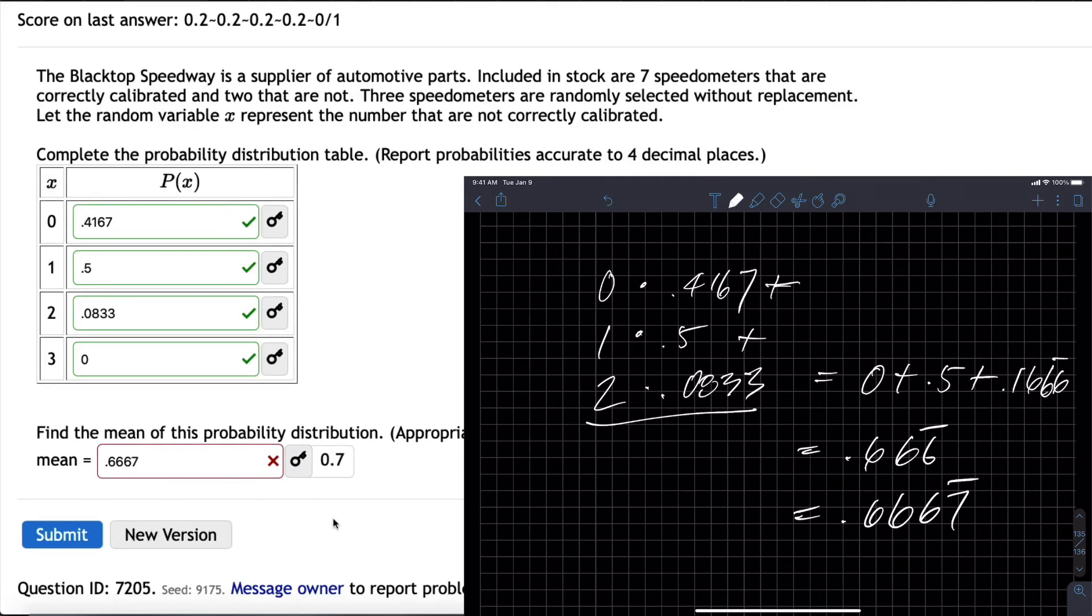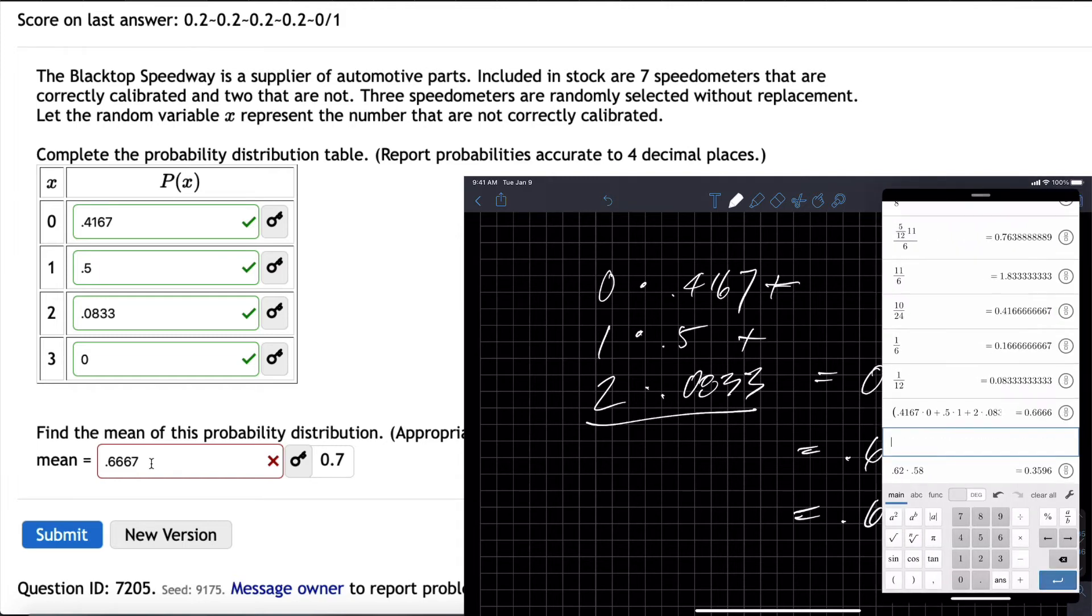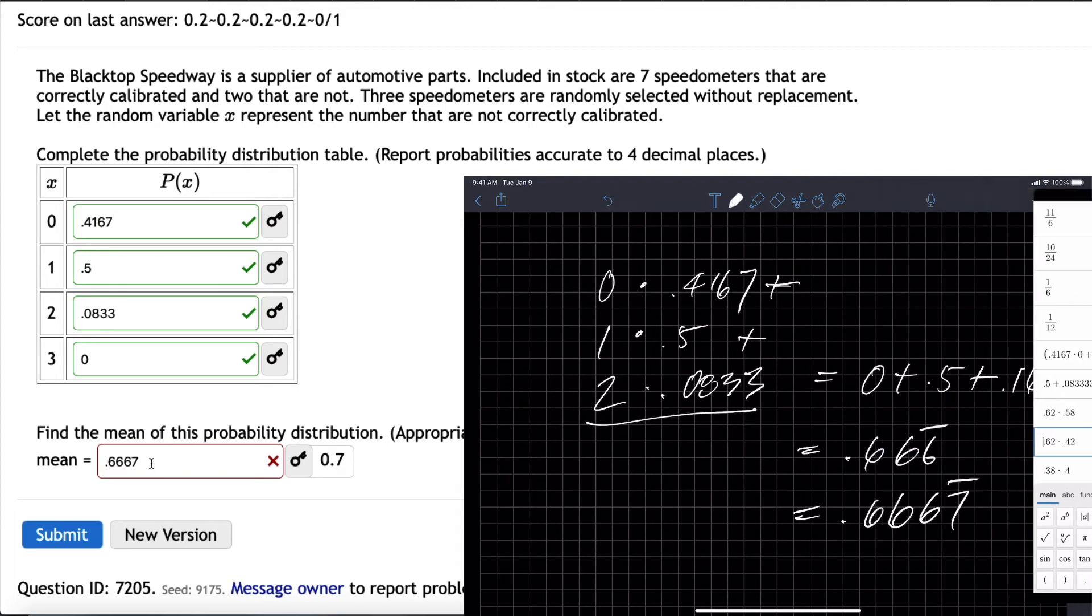They're telling me it's wrong. I'm not sure why they would round to one decimal place, 0.7. I can check my math. 0.4167 times zero is zero, so I got 0.5 plus 0.08. It could be because I cut this off. I still get that, of course. Not liking how this person wrote the question, but clearly they want you to put 0.7 in there.